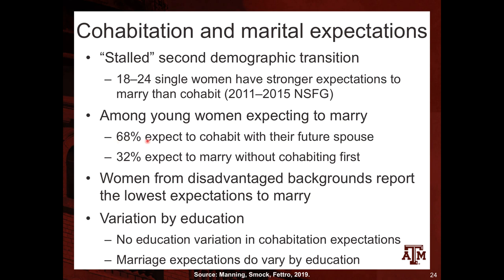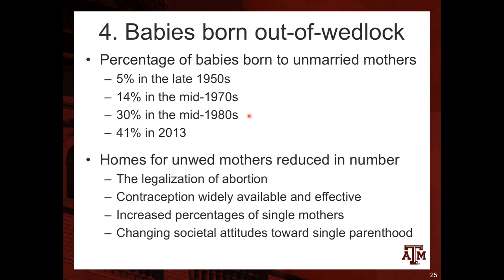There is a higher percentage of women expecting to cohabit than to marry, but these numbers have not been changing much among young women in more recent years. The fourth topic concerns babies born out of wedlock — the percentage of babies born to unmarried mothers increased from 5% in the 1950s to 41% in 2013.